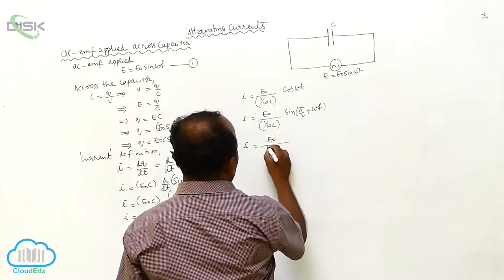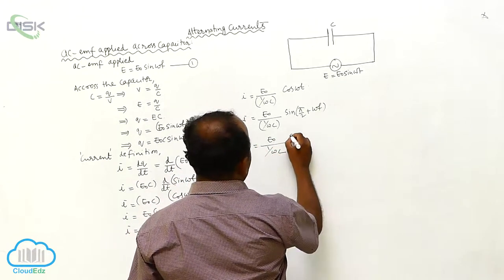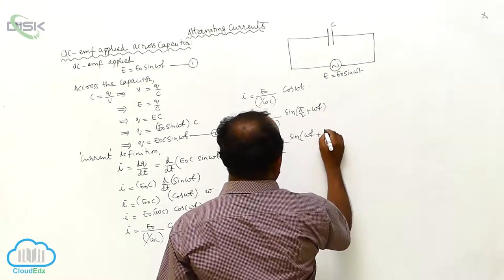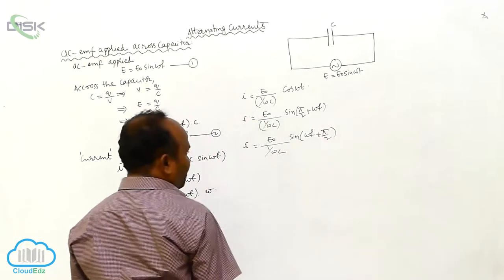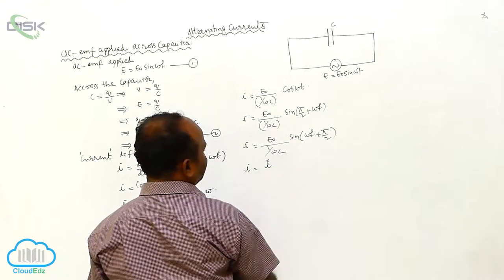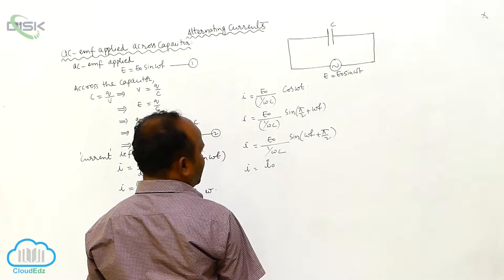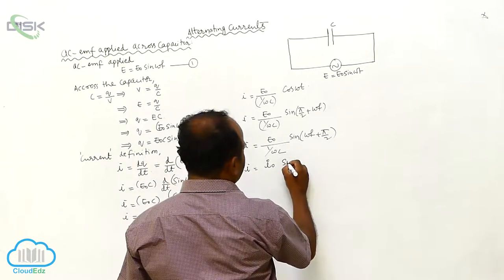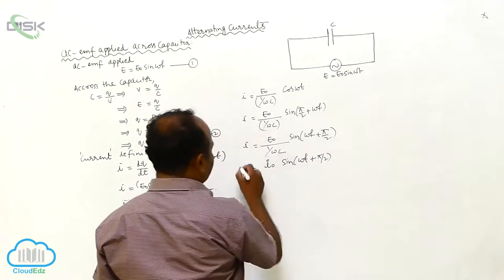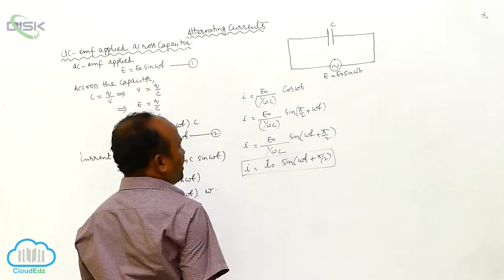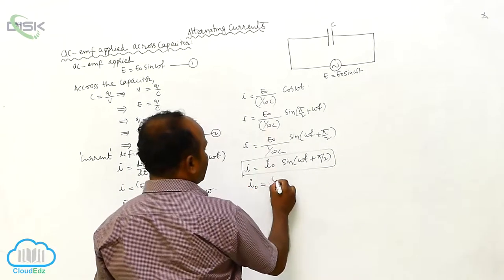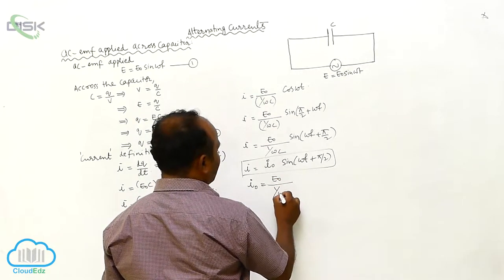Since sin(90° + ωt) = cos(ωt), the current can be written as i = (E₀ / (1/ωC)) sin(ωt + π/2). This is the expression for current, written as i = I₀ sin(ωt + π/2).